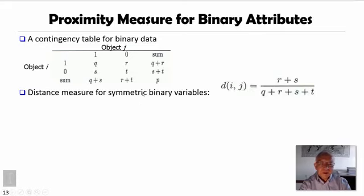Then for symmetric binary variables, that means the chance they appear or they not appear actually have equivalent chances or approximately same chances. We call these symmetric binary variables. In that case, their distance, like r and s, these two cases, they are different, so their distance measure is r plus s divided by all the cases.